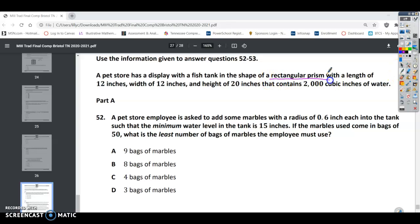So we have a rectangular prism, which equals length times width times height. We know that we have 12 inches as our length, 12 inches as our width, 20 inches as our height, and we have 2,000 cubic inches of water. We have marbles with a radius of 0.6 inches, and we need a minimum water level of 15 inches.